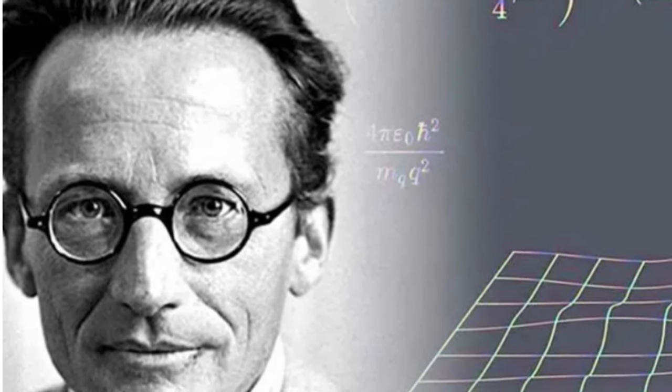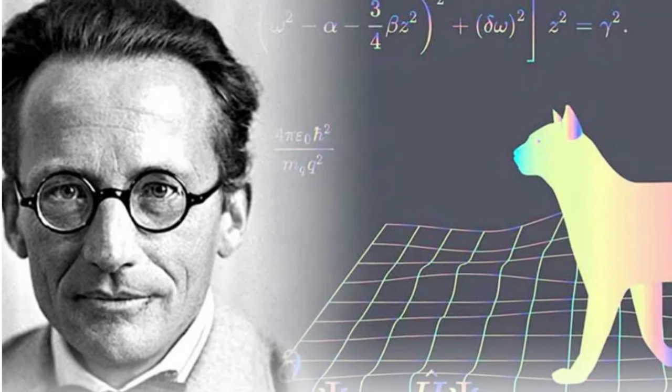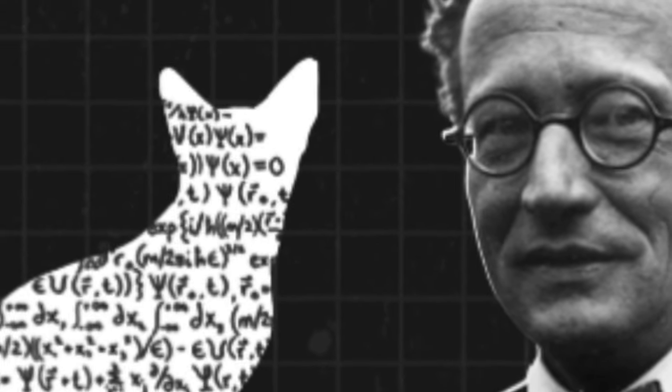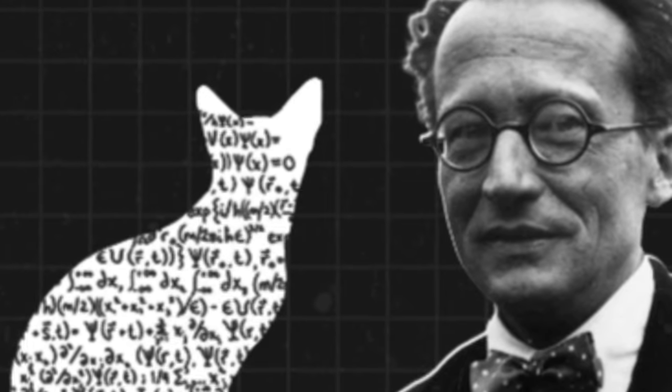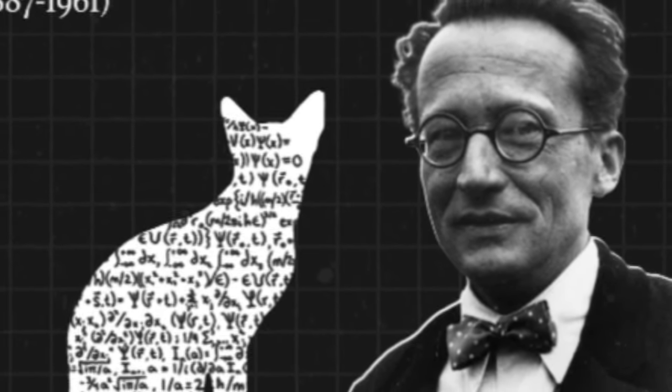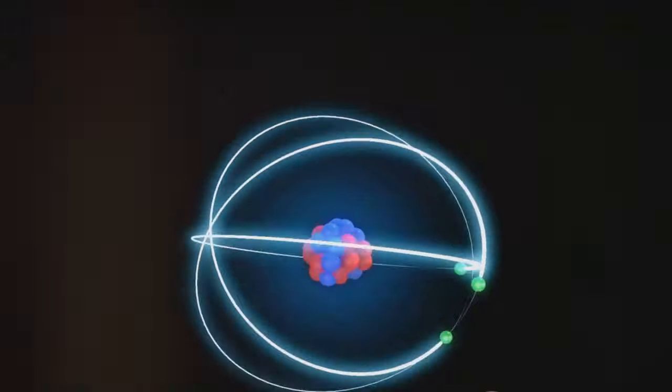Erwin Schrödinger, a man who would forever change our understanding of this quantum realm, he proposed a thought experiment involving a cat, a flask of poison, a radioactive source, and a box. The cat, he suggested, could be both alive and dead until someone opened the box to check. This wasn't a morbid fascination with feline mortality, but rather an illustration of the strange concept of superposition.